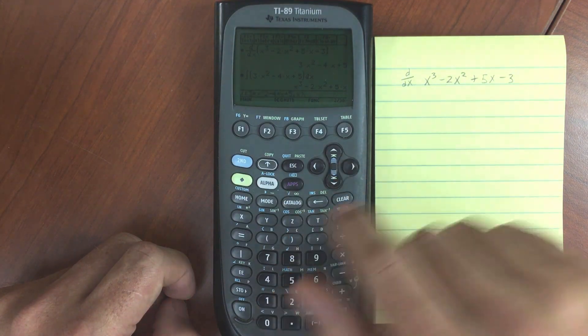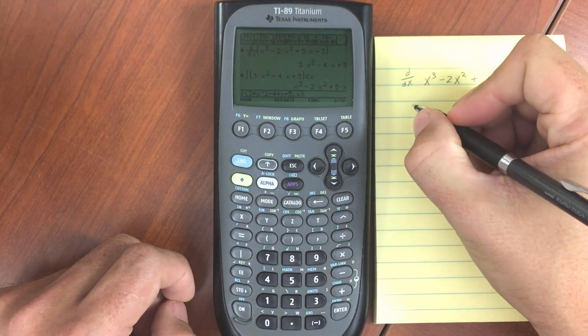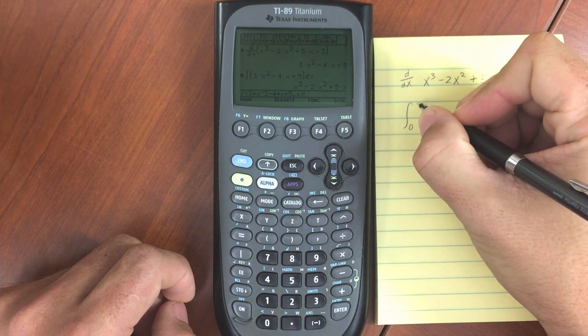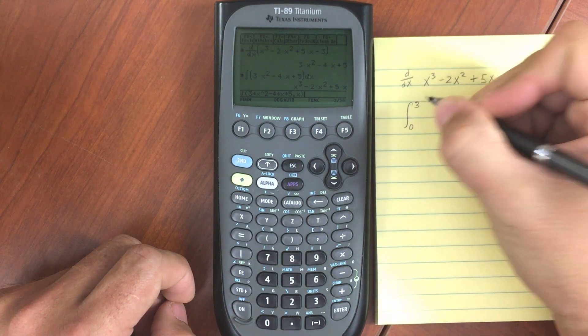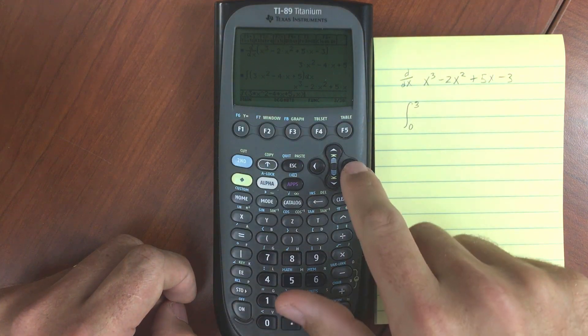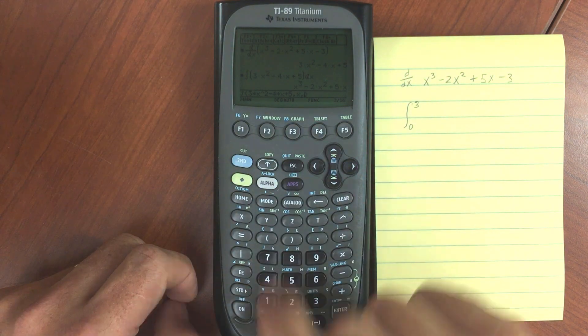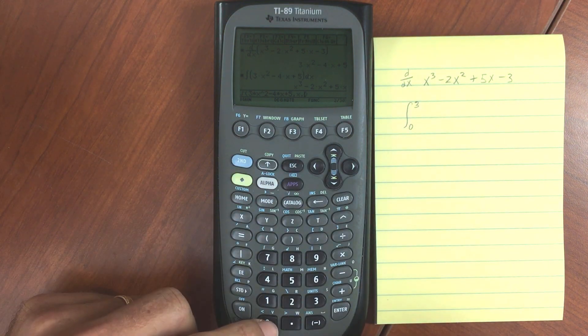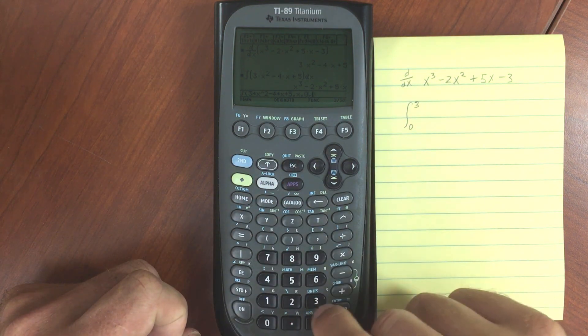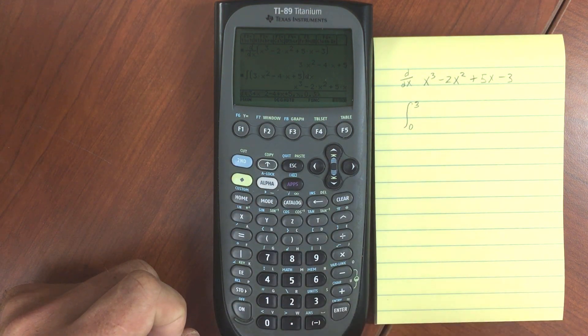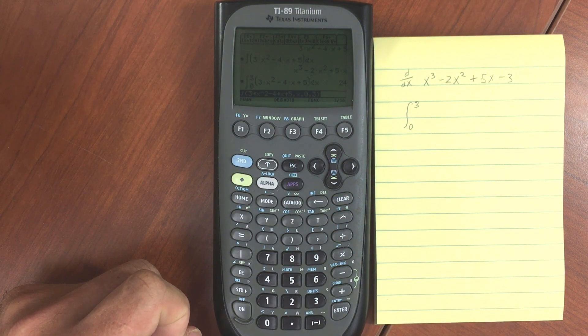However, let's say we want to integrate this from 0 to 3 and find out what that is. I can just take this expression and do other commas. So I'm integrating with respect to x, and then my limits are 0 and 3. Hit that again, and we get an answer of 24.